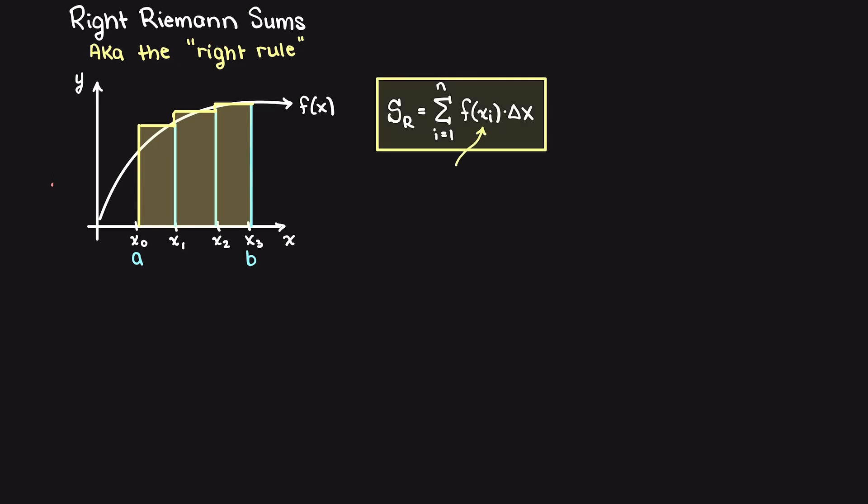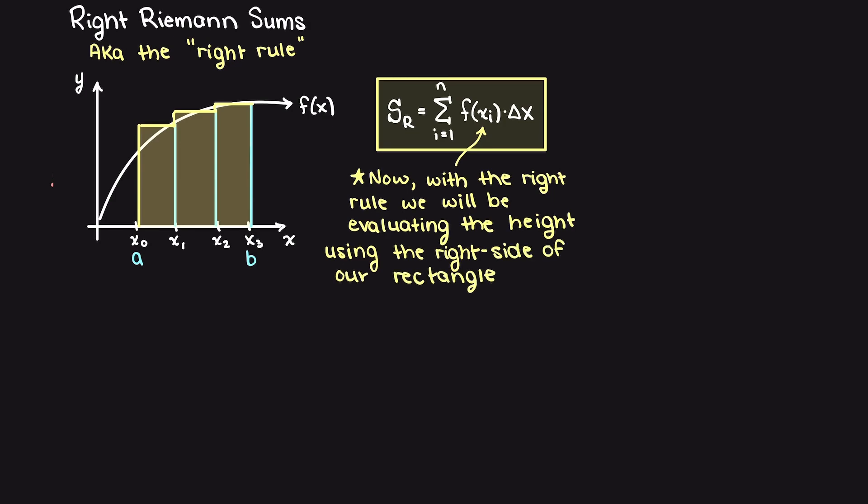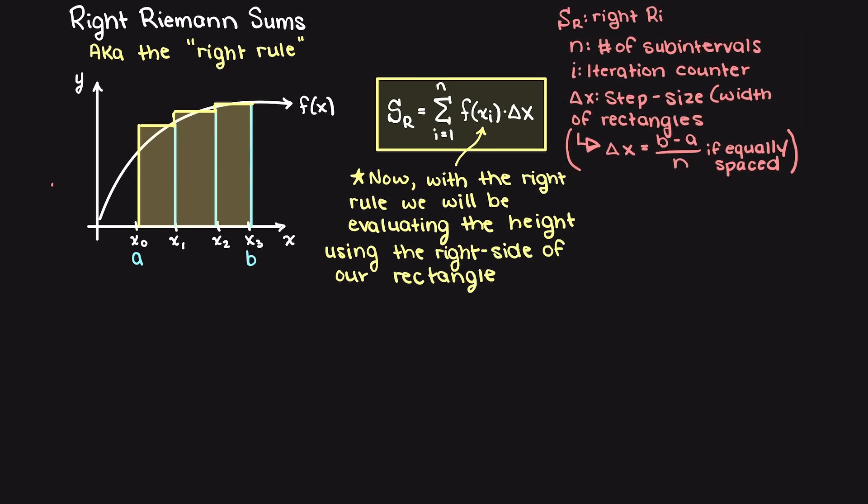Writing out the general right Riemann sum formula, you can see that we are now using xi instead of xi minus 1, as we want to begin our summation from x1, as shown on the graph.